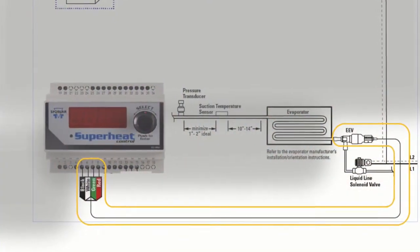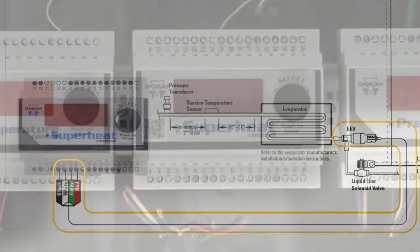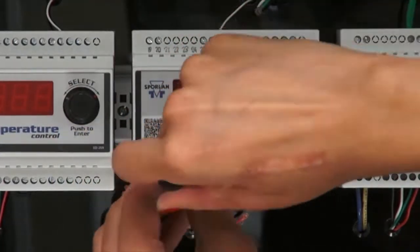Then we can take the black, white, green, and red wires and connect them to terminals 5, 6, 7, and 8 onto our controller box.